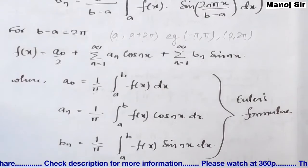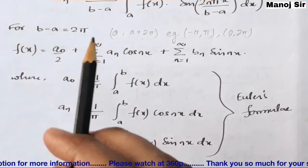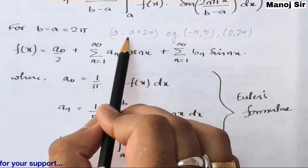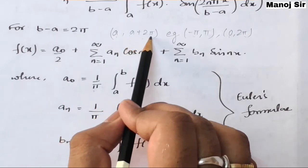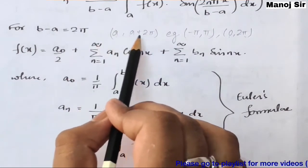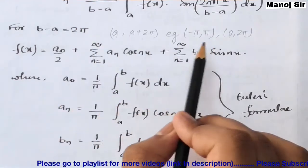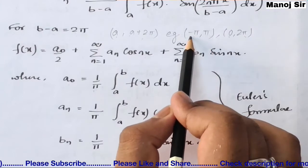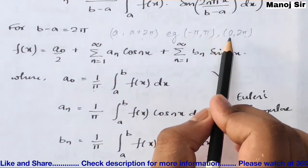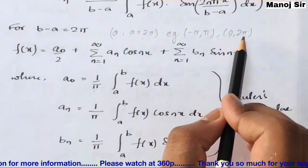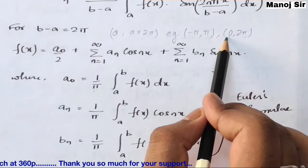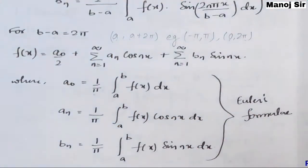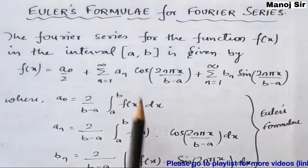In many problems you will get b - a = 2π. For example, the interval (a, a+2π) gives b - a = 2π. Similarly, the interval (-π, π) gives b - (-π) = 2π, and the interval (0, 2π) also gives b - a = 2π - 0 = 2π.